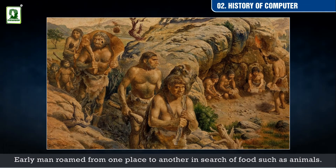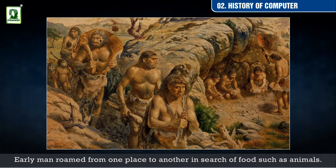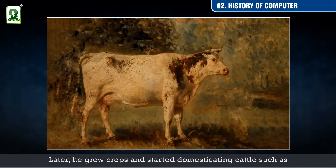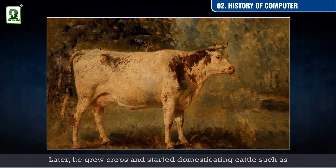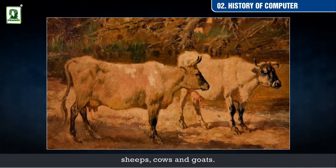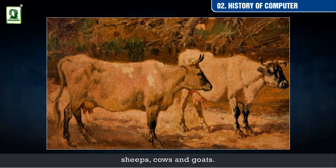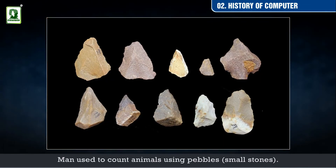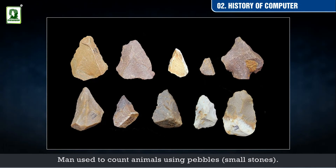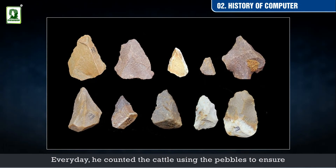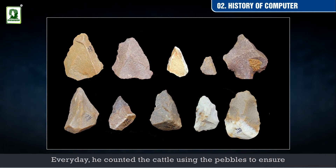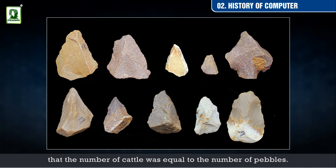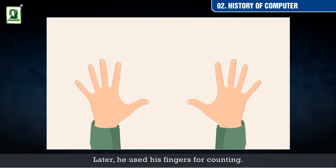Early men roamed from one place to another in search of food such as animals. Later, he grew crops and started domesticating cattle such as sheep, cows, and goats. Man used to count animals using pebbles — small stones. Every day, he counted the cattle using pebbles to ensure that the number of cattle was equal to the number of pebbles. Later, he used his fingers for counting.